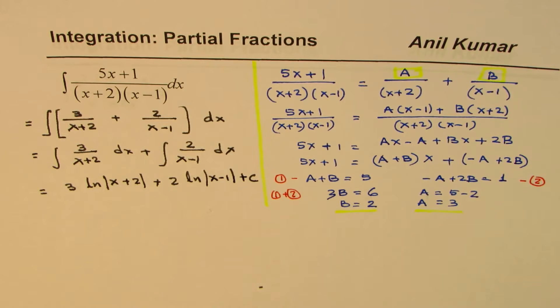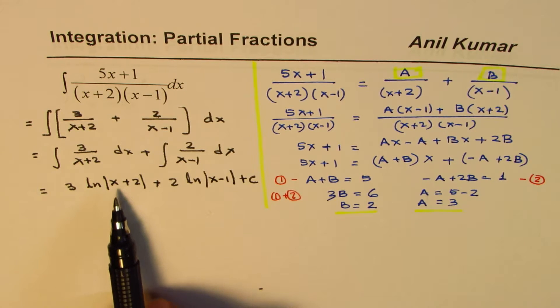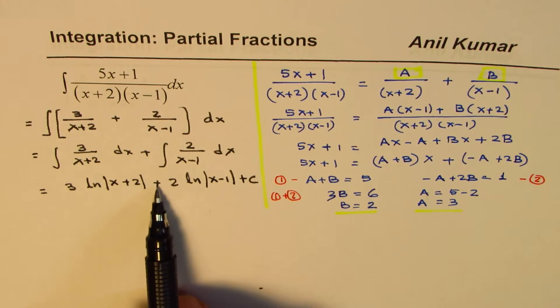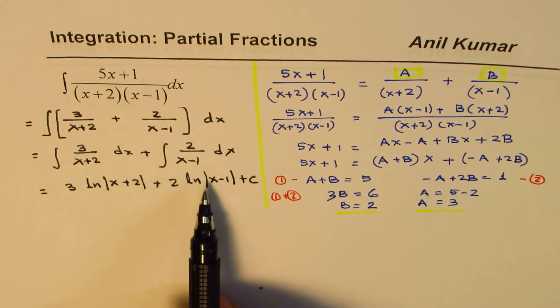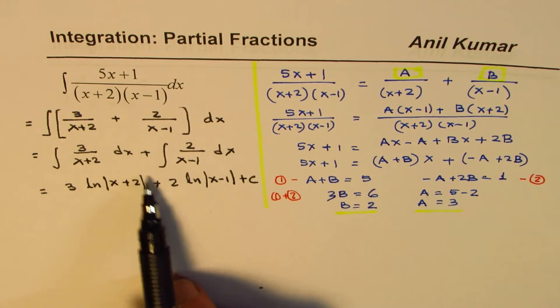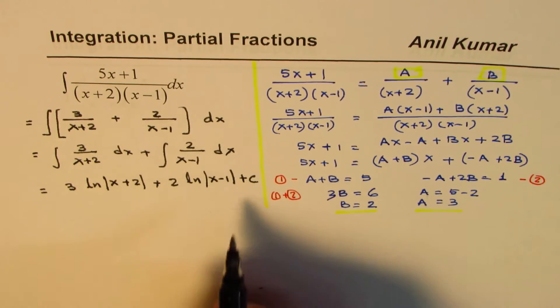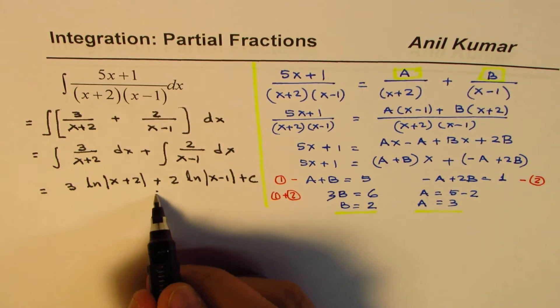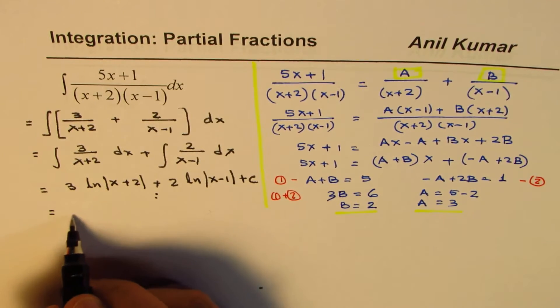So that is the result which you get from here. So you could write this result as such, or you can use the properties of log. Plus here means multiply them. This power means that is the power there. So you could actually simplify it further also. Let me do a part of it.